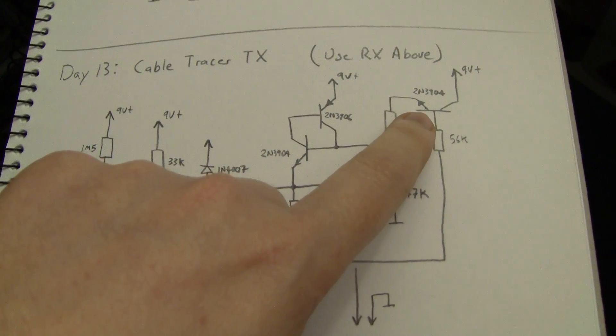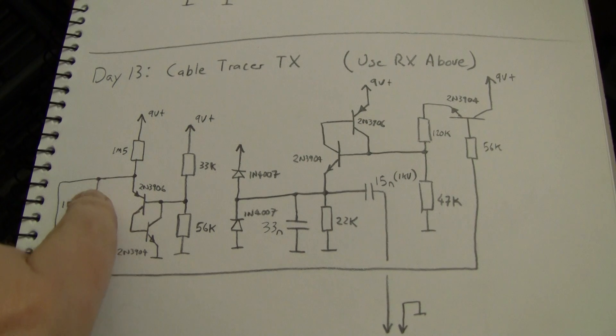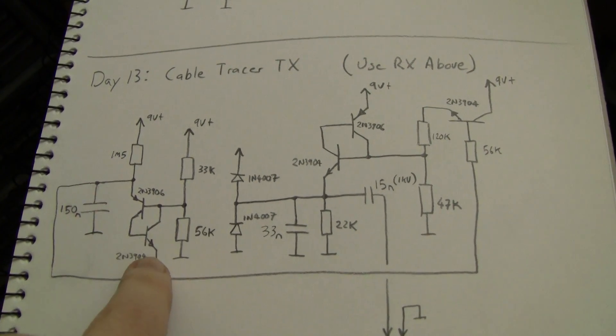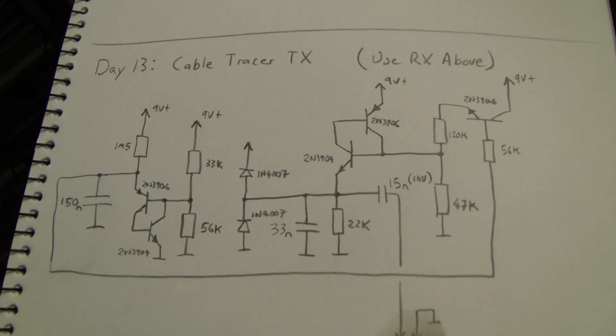And I needed an emitter follower to buffer the relatively high impedance. I don't want to pull too much current out of this part of the circuit because it's being fed. You can see 1 meg 5 is a fairly small current being injected into that capacitor.